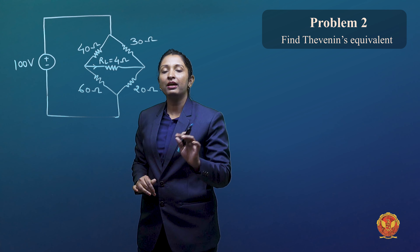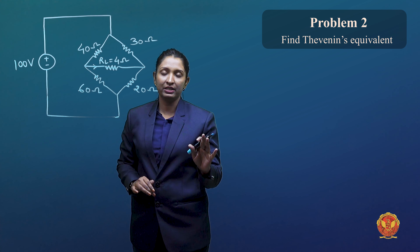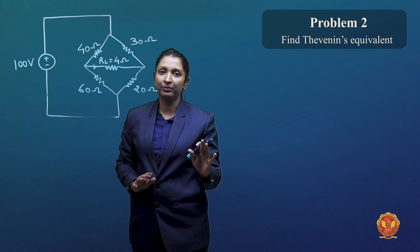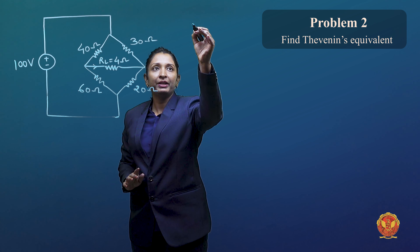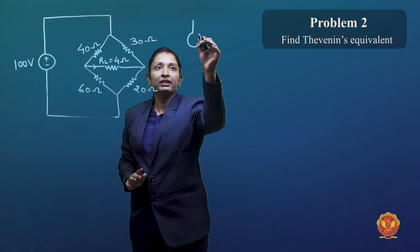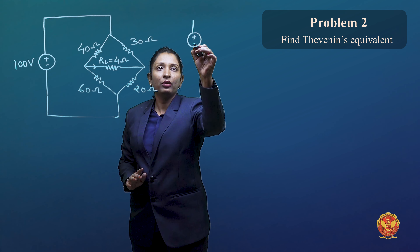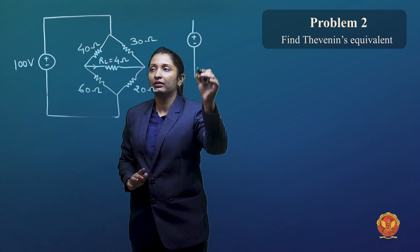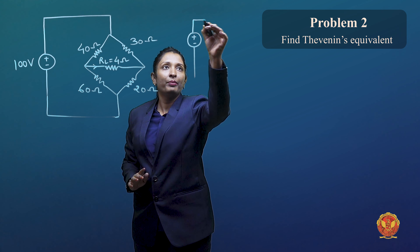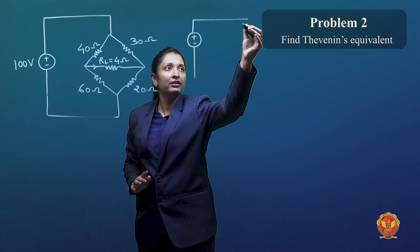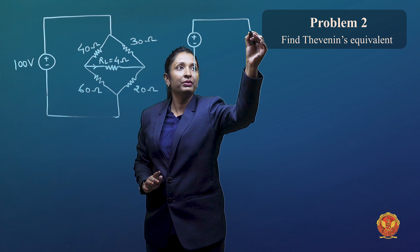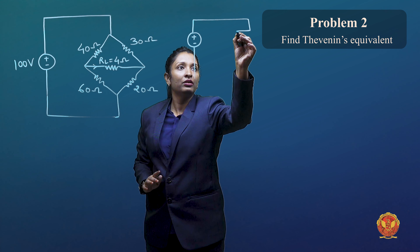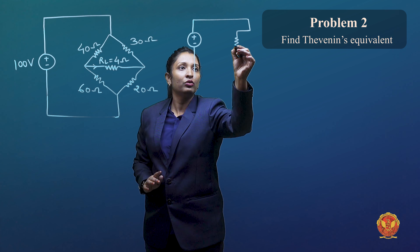What is the first step for Thevenin's theorem? The first step is to open the circuit. We remove our load of 4 ohms resistance — we have opened it.